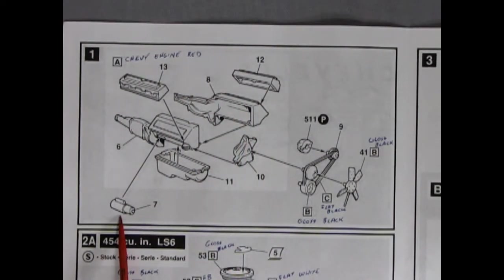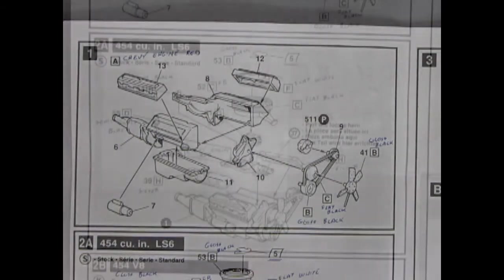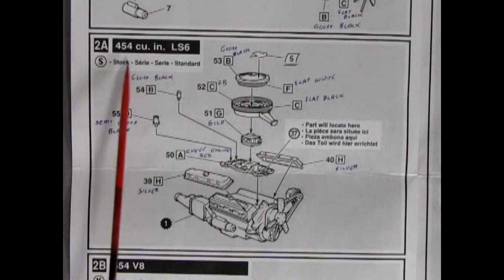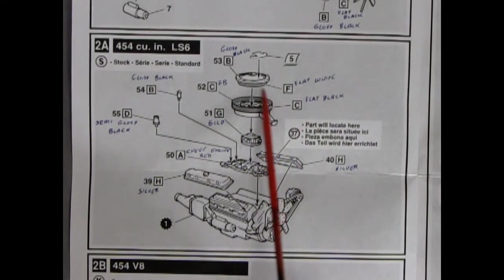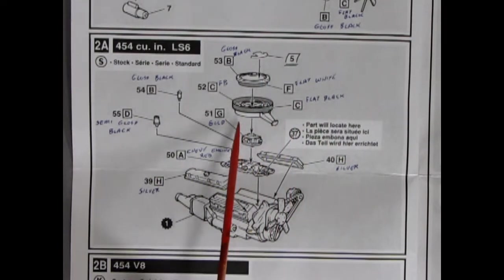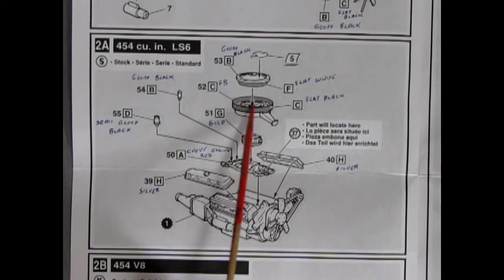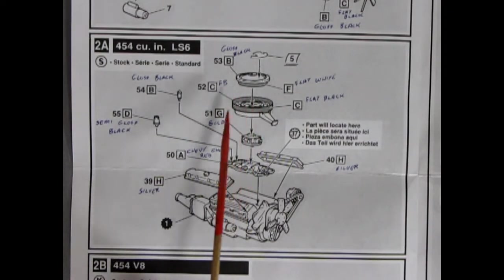Starter motor doesn't have a color call-out, but it should be black. And here we have the stock 454 cubic inch LS6 motor. The air cleaner, that big gigantic air cleaner, goes on here. Ah, it's a Ram Air style with that nice seal that butts up underneath the hood. So that's why it's huge.